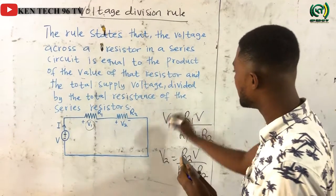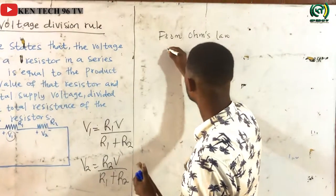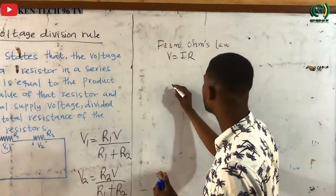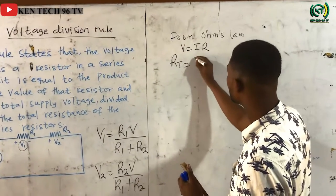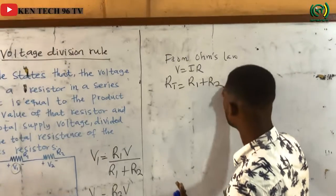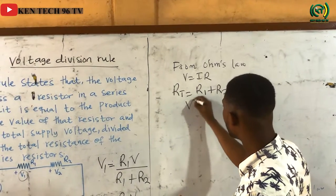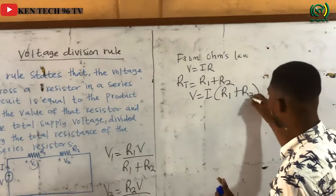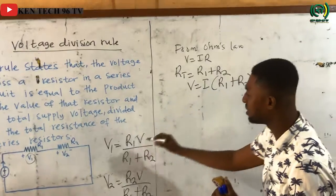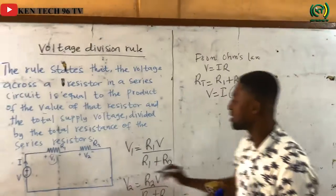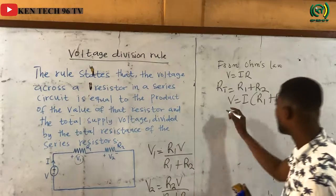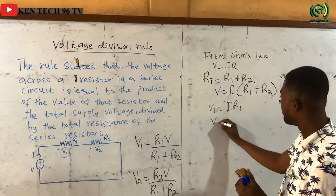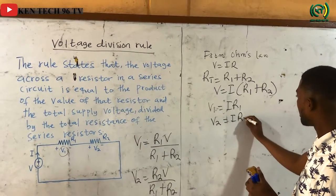So let's look at how these formulas came into existence. From Ohm's law, V is equal to IR. Since these resistors are connected in series, their total resistance Rt is equal to R1 plus R2. So from Ohm's law, V will be equal to I times the quantity R1 plus R2. Now if I want to calculate the voltage drop across resistor R1, V1 will be equal to I times R1, and V2 will be equal to I times R2.